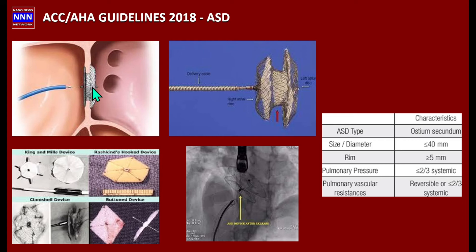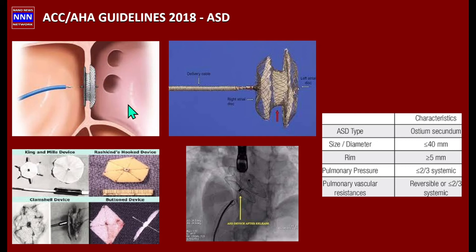For a device to be placed properly, an ostium secundum atrial septal defect is ideal. The size of the opening must be reasonable — if it is too large, the device may not fit or may leak around the edges. We also need at least five millimeters of septal rim at the top and bottom for the device to anchor properly. If the opening is too close to the edge, the device cannot co-apt correctly.